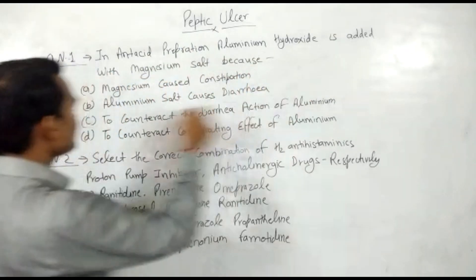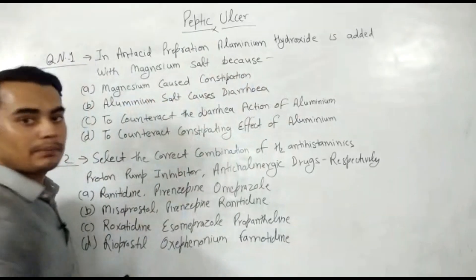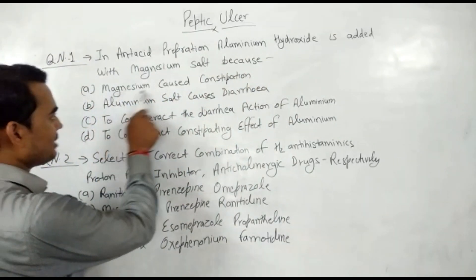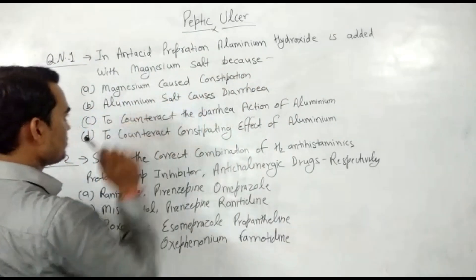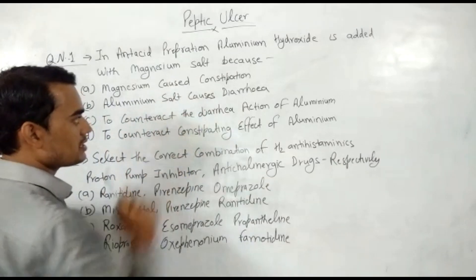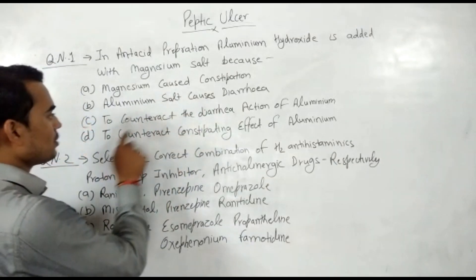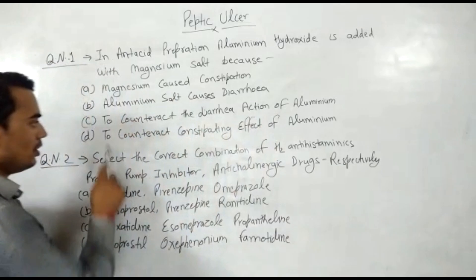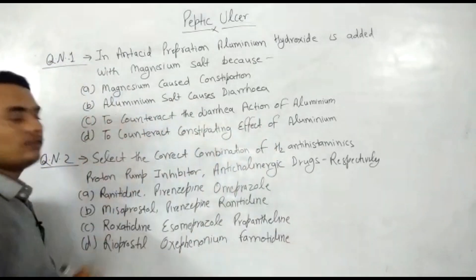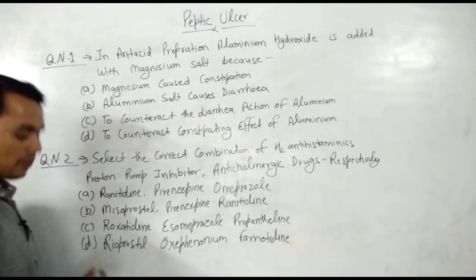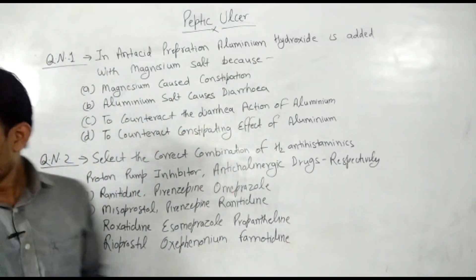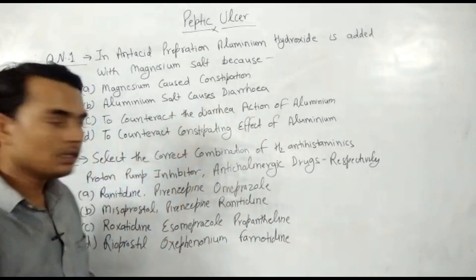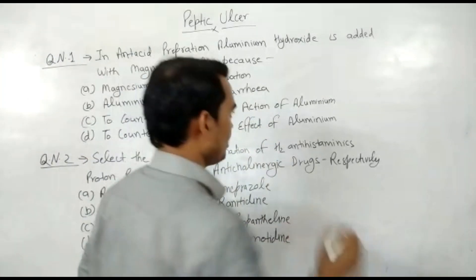The options are: magnesium causes constipation; aluminium causes diarrhea; to counteract the diarrhea action of aluminium; or to counteract the constipating effect of aluminium. To understand this question, remember one key thing.